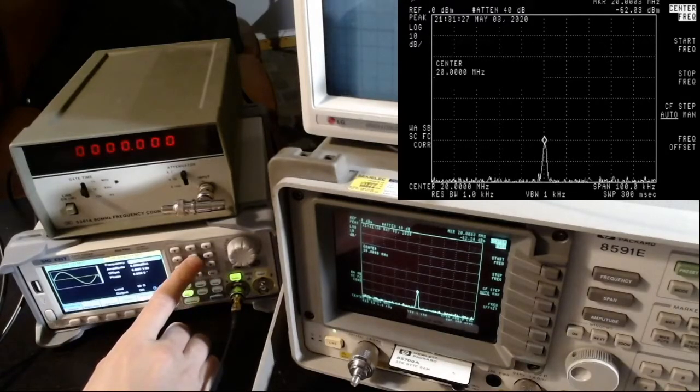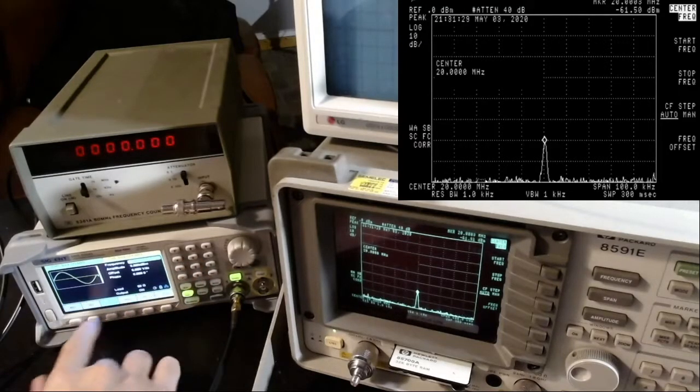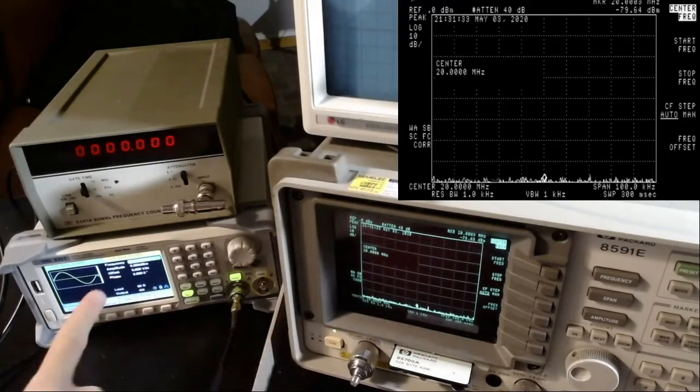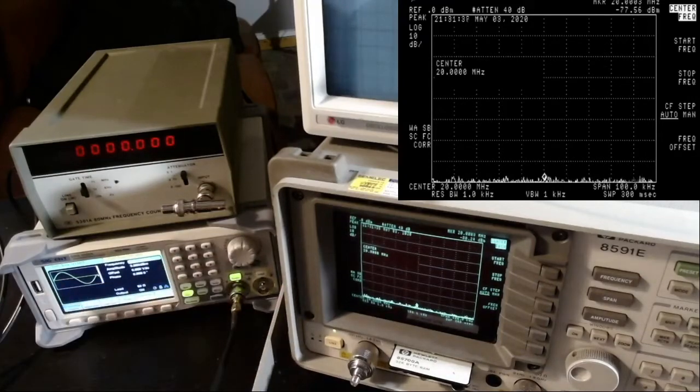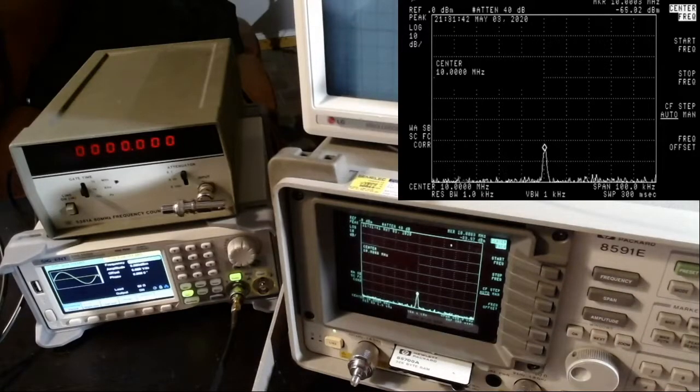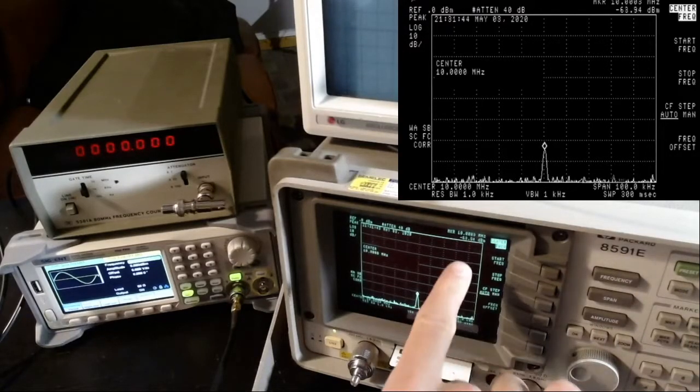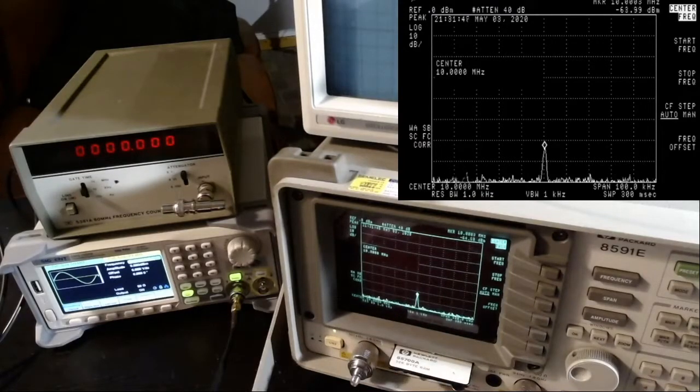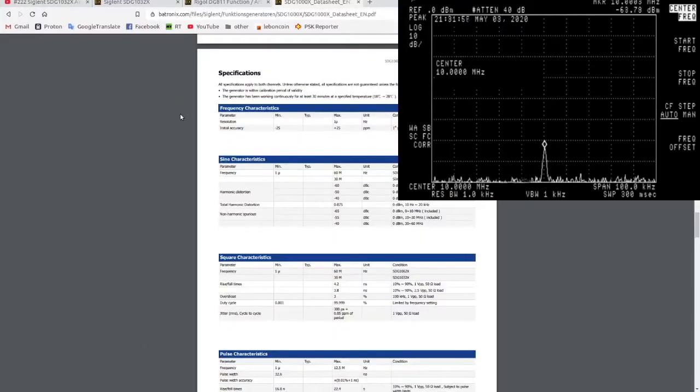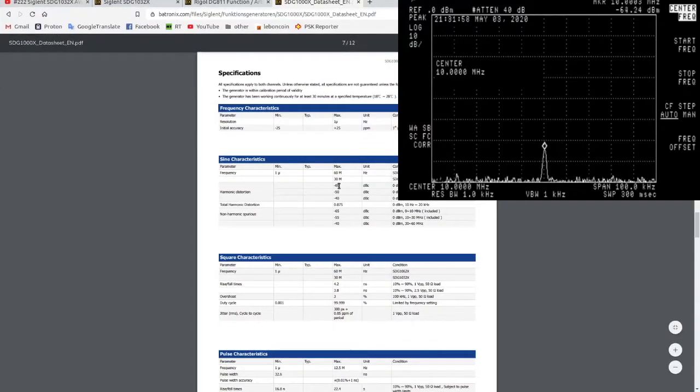Let me try with 5 megahertz. At 5 megahertz, the harmonics at 20 megahertz, which would be the fourth harmonics for a 5 megahertz signal, has completely disappeared. Let me go to the second harmonics at 10 megahertz. It's there at minus 64-65 dB, so at 5 megahertz you get minus 65 dBc. That's completely within specifications. It should be minus 60; in fact it's even better at minus 65.